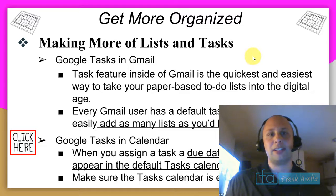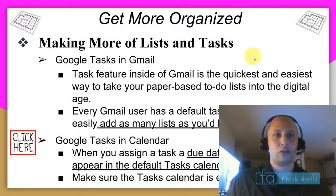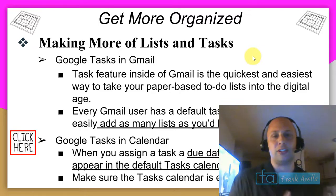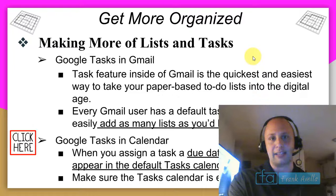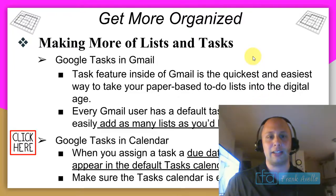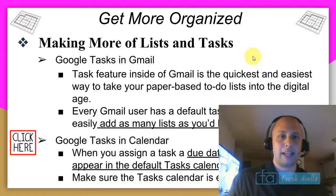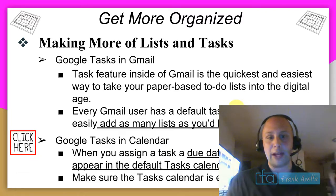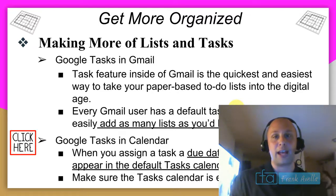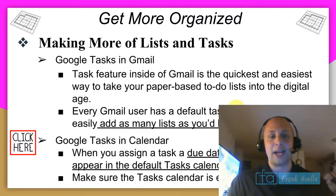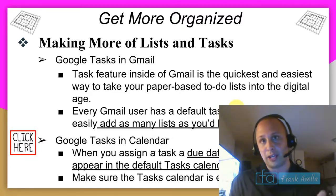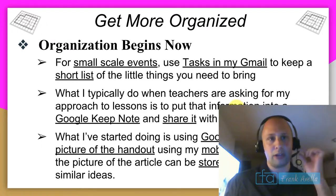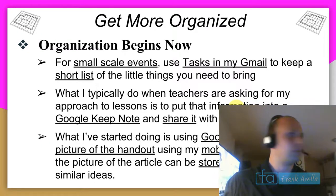To make the most of Google Tasks in Gmail: the Tasks feature is the quickest way to turn a paper to-do list into a digital one. Every Gmail user has a default task list and can add as many lists as they like. In Google Calendar, you can assign a task a due date and it will automatically appear in your Tasks calendar — just make sure the Tasks calendar is enabled.